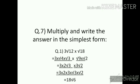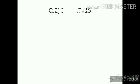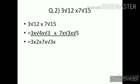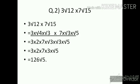Question number 2: 3√12 × 7√15. Split 12 as 4 × 3, and 15 as 3 × 5. So: 3 × √4 × √3 × 7 × √3 × √5. 4 is a perfect square giving 2, so: 3 × 2 × 7 × √3 × √3 × √5. √3 × √3 = 9, which is a perfect square giving 3. So: 3 × 2 × 7 × 3 × √5 = 126√5.